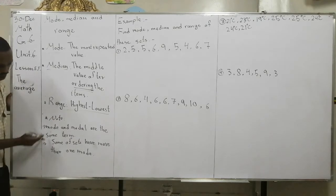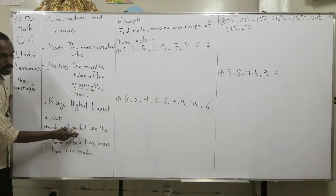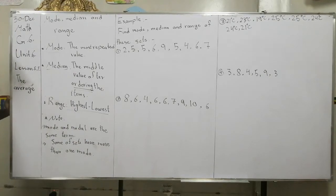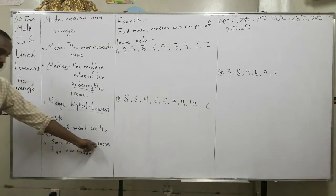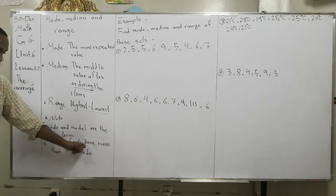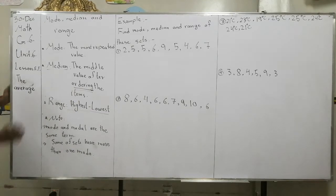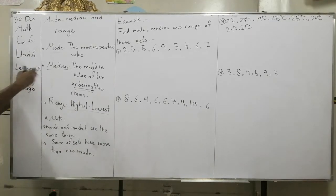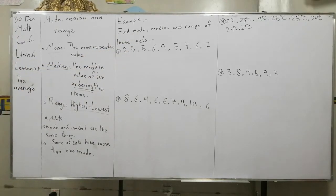Sometimes they ask you to find the mode, sometimes they ask you to find modal — but mode and modal are the same term. If you find more than one most repeated number in a set, some sets of numbers have more than one mode. If there are two values that are the most repeated, we're going to list both of them.